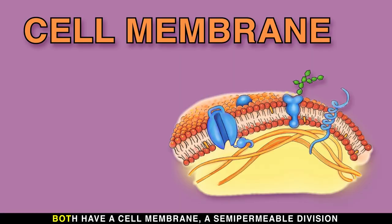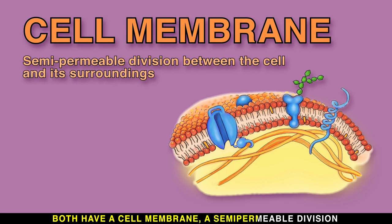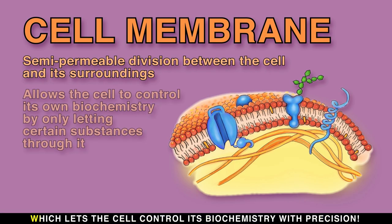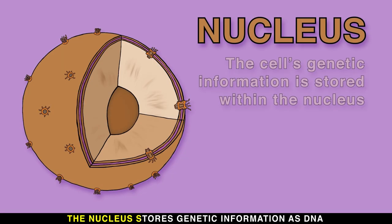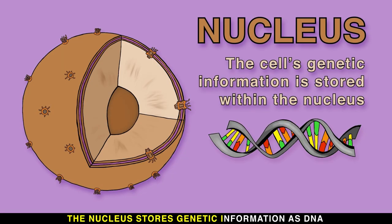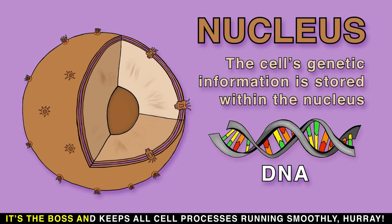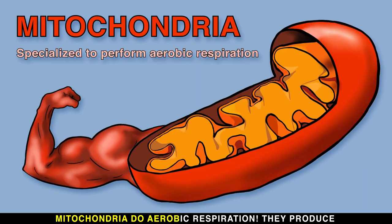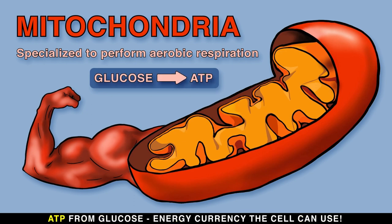Both have a cell membrane, a semi-permeable division which lets the cell control its biochemistry with precision. The nucleus stores genetic information as DNA — it's the boss and keeps all cell processes running smoothly. Mitochondria do aerobic respiration; they produce ATP from glucose, the energy currency the cell can use.